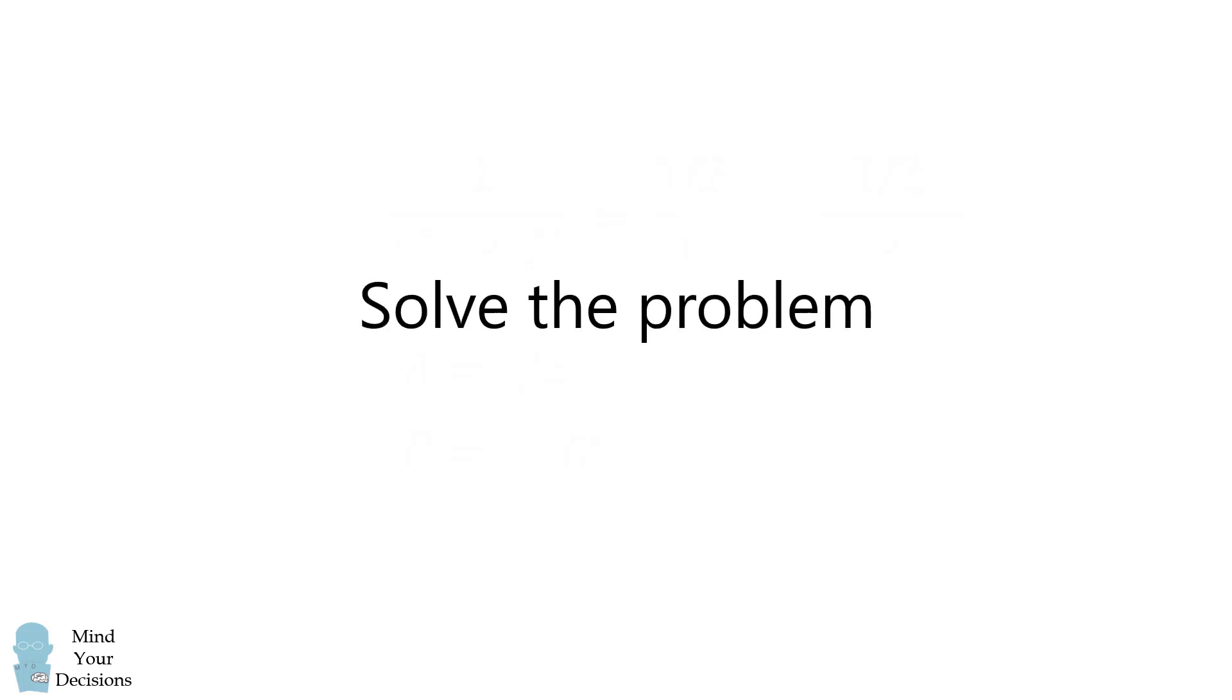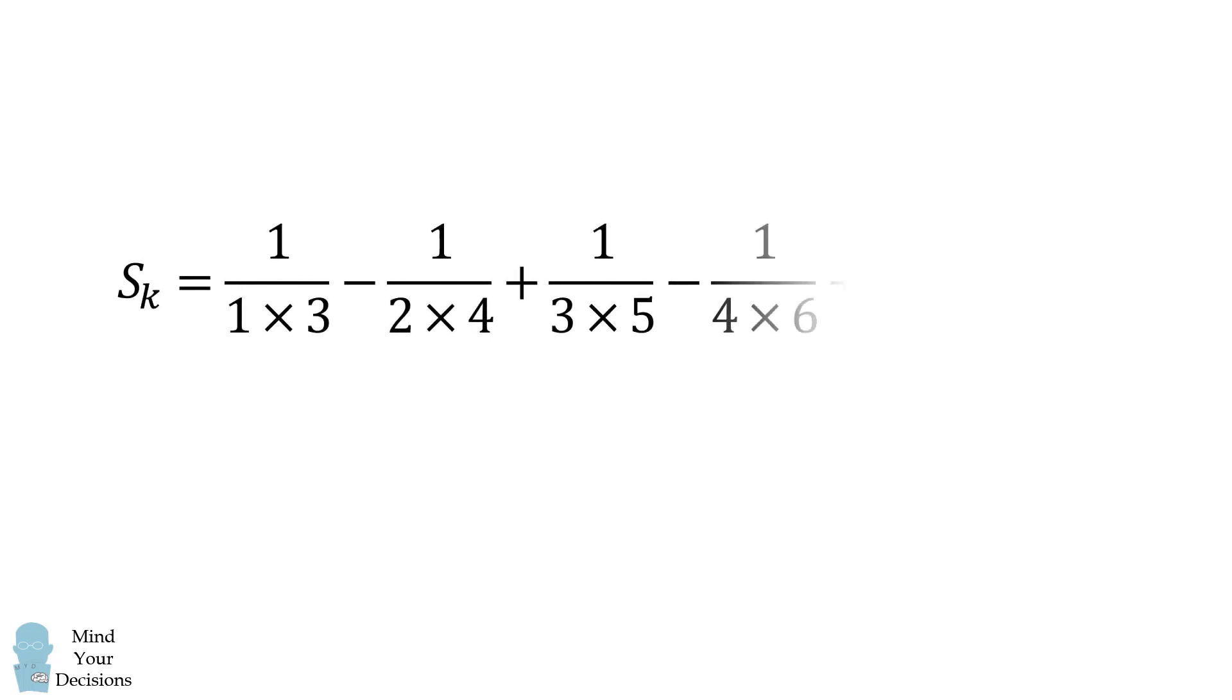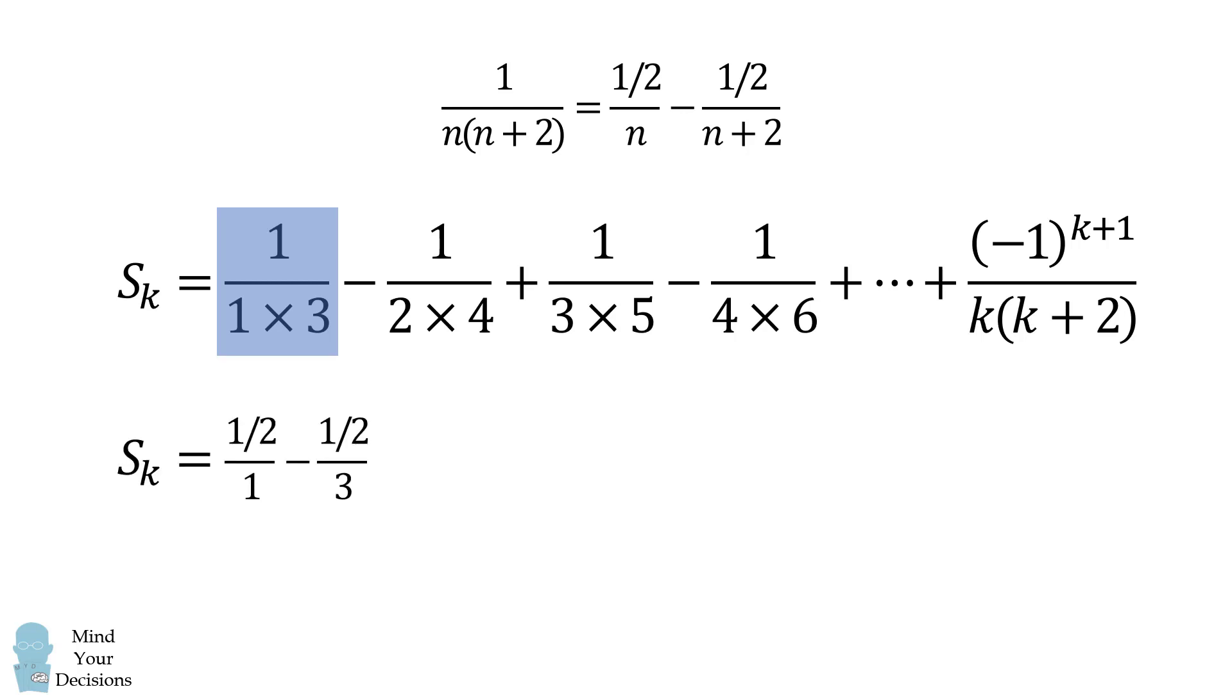We will now solve the problem. Let's take the partial sum up to k terms, where k is greater than 4. We will then use the partial fraction decomposition on each term. So the first term will become 1 half over 1 minus 1 half over 3. We will use the partial fraction decomposition for the second term, but we need to subtract. So in this case, the signs will be reversed. We need to subtract 1 half over 2 and then add 1 half over 4.